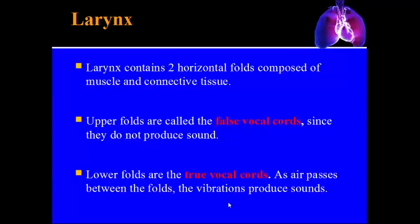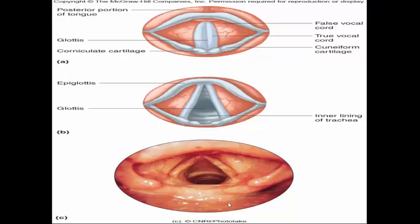The larynx is made of two horizontal folds of muscle and connective tissue. The upper folds are the false vocal cords — they do not produce sound. The lower folds are the true vocal cords, which vibrate as air passes over them to make sound; the faster air passes, the higher the pitch. If someone is intubated with a respirator, the tube passes through the glottis into the trachea.